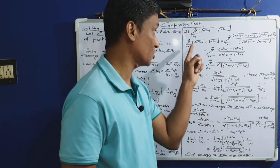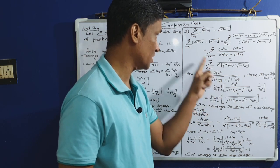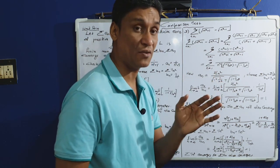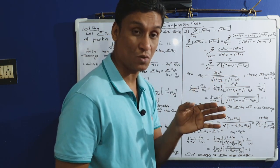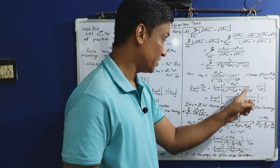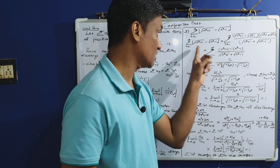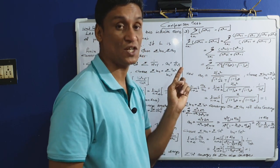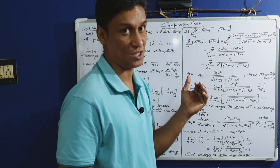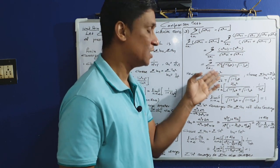Limit n tends to infinity of a_n by b_n equals 1, a finite nonzero quantity. Sigma b_n equals sigma 1/n², which converges. Since sigma a_n and sigma b_n have the same behavior by the limit comparison test, sigma a_n also converges. Due to the comparison test, the series sigma [√(n⁴+1) − √(n⁴−1)] is convergent.